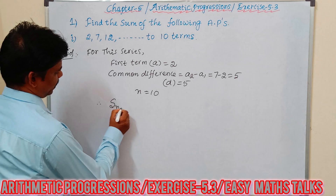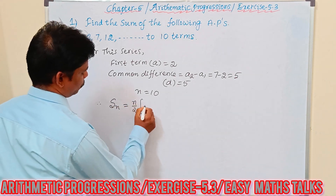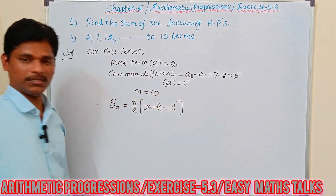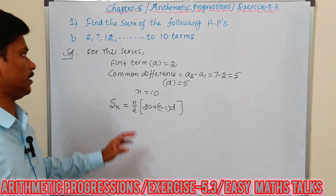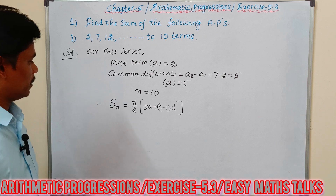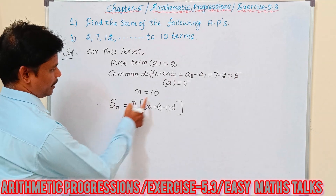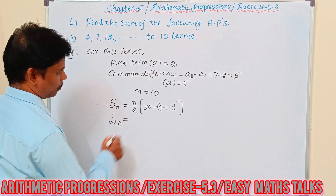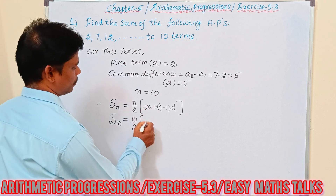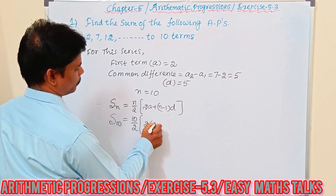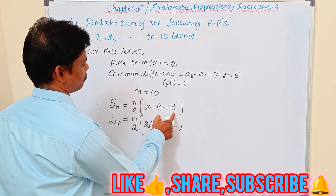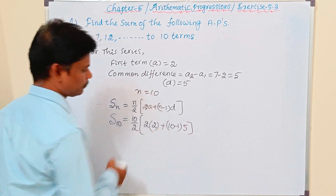Substituting into the formula: S10 = 10/2 × (2×2 + (10−1)×5) = 5 × (4 + 9×5) = 5 × (4 + 45) = 5 × 49.